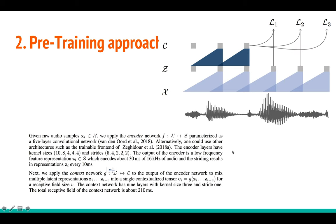As I said, we have x, which is a raw audio waveform — a highly varying signal at, for example, 16 kHz, meaning 16,000 samples per second. The encoder is a function, in this case a convolutional neural network, mapping from x space to z space. The function f maps x (the audio) into z (the latent space embeddings). This f function is parameterized using a five-layer CNN.